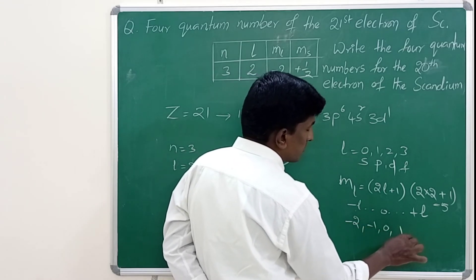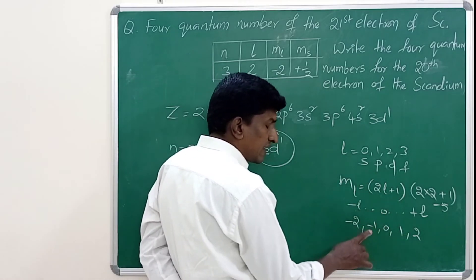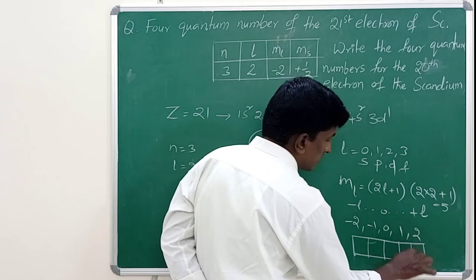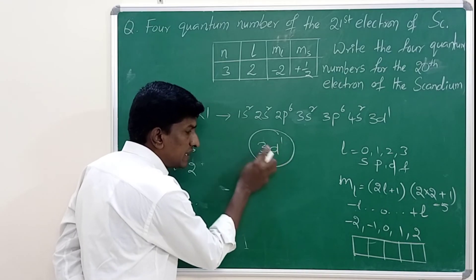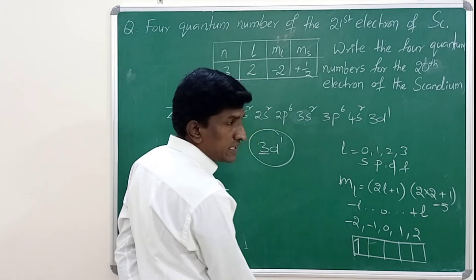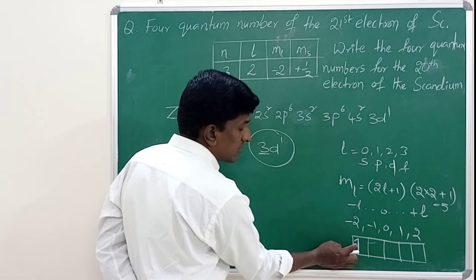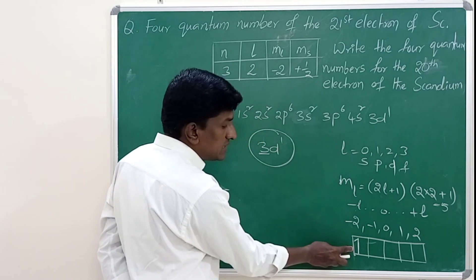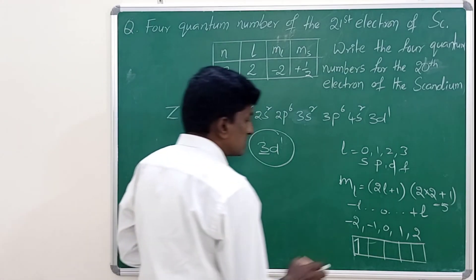The ml values for the d orbital are: −2, −1, 0, +1, and +2, meaning the d orbital divides into five finer orbitals. Each finer orbital can be filled with two electrons. The 21st electron in scandium is the first electron in the d orbital, so it fills the first d orbital, giving ml = −2. For spin quantum number, the first electron in any orbital has spin +1/2, so the 21st electron has spin quantum number +1/2.